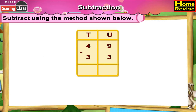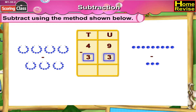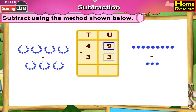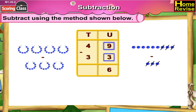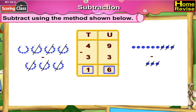49 minus 33. If you arrange them under tens and units, it is 4 tens 9 units minus 3 tens 3 units. Now 9 minus 3 is 6. 4 minus 3 is 1. So it is 1 ten 6 units, which means 49 minus 33 is 16.